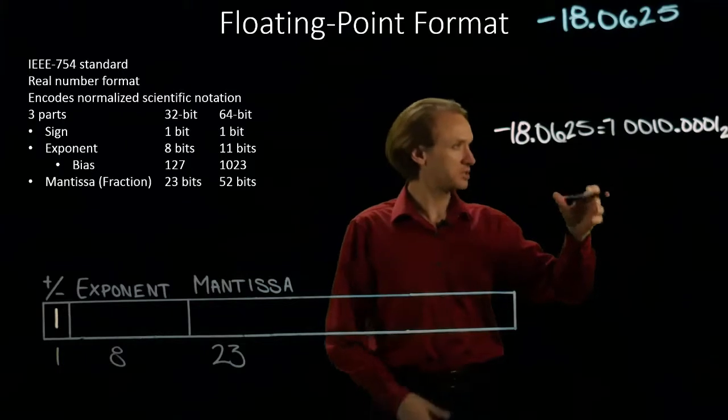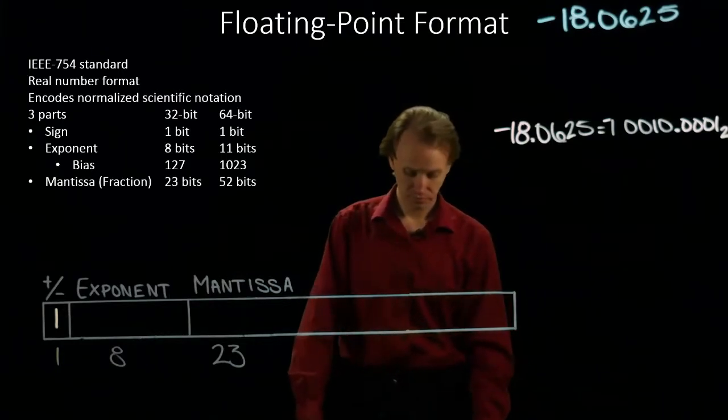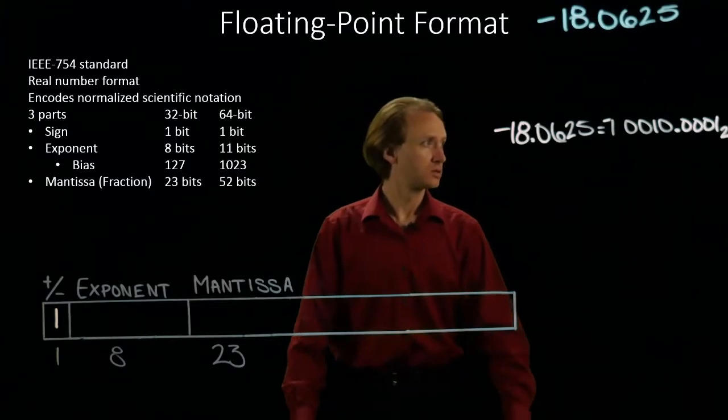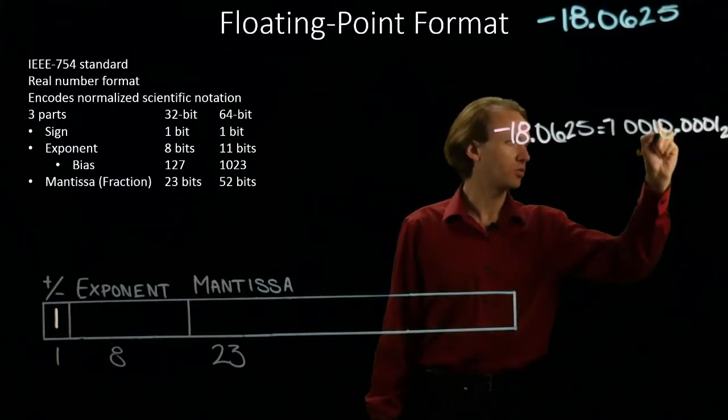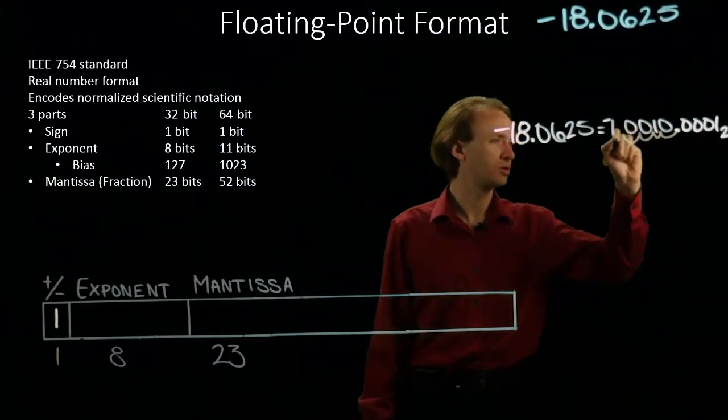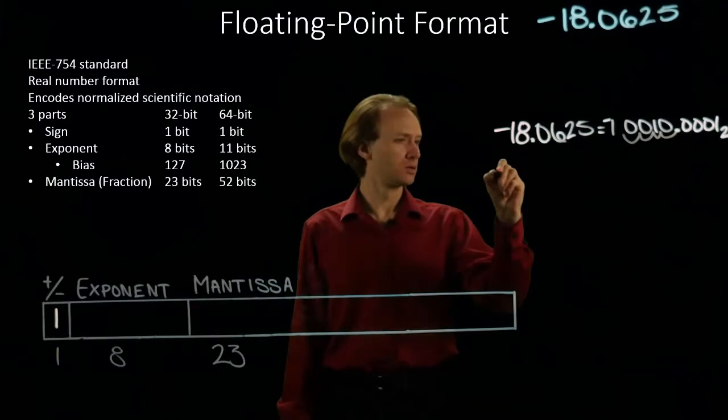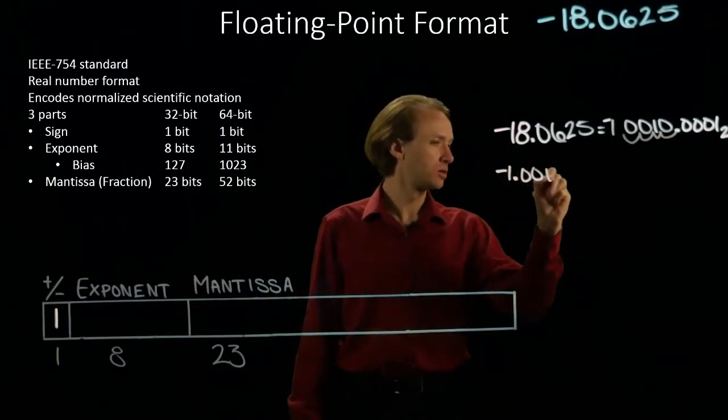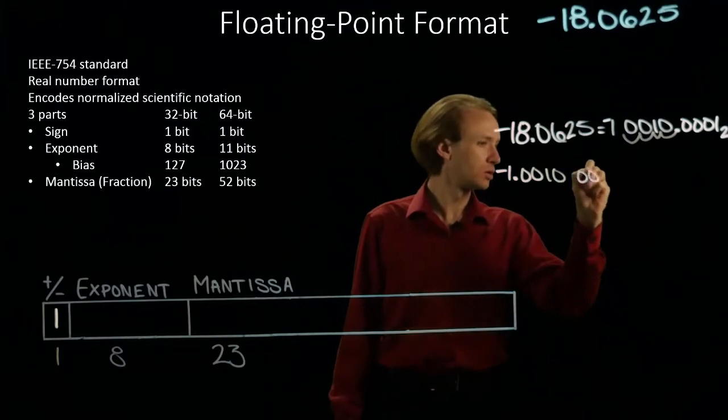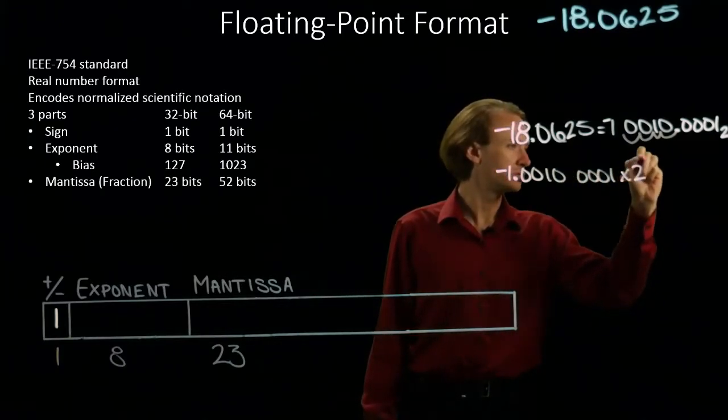But I really need to convert this number into normalized scientific notation. To do that, I'm going to need to move my binary point over 1, 2, 3, 4 places. Which will give me negative 1 point times 2 to the fourth.